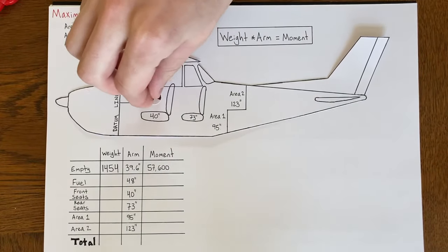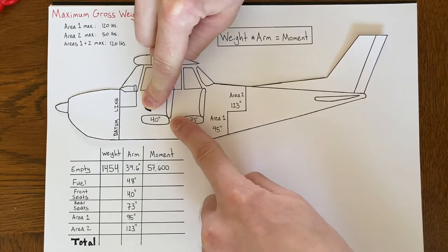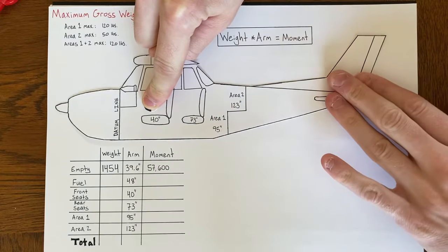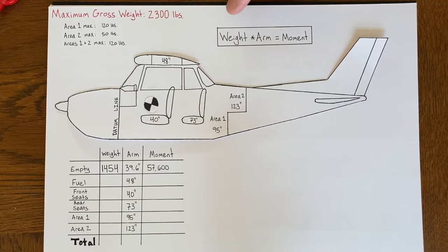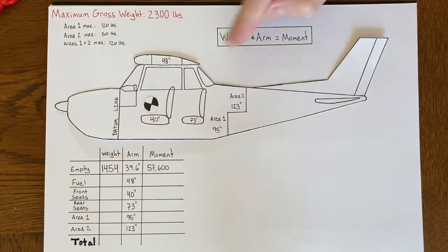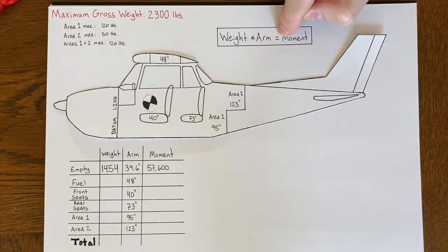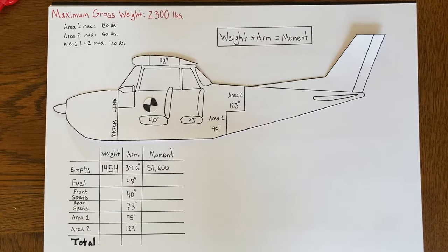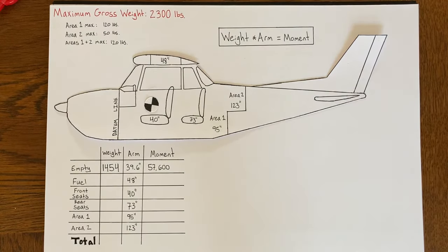100 pounds close to the center of gravity does not produce the same tilting force as 100 pounds placed far out. To find where the center of gravity is, we multiply the weight at each station times the arm for that station — already written out in this table — to find the moment, or tilting force, caused by the weight at that station. Then we add up all those tilting forces and all the weights, and solve the equation to find the arm, or the location of the center of gravity.